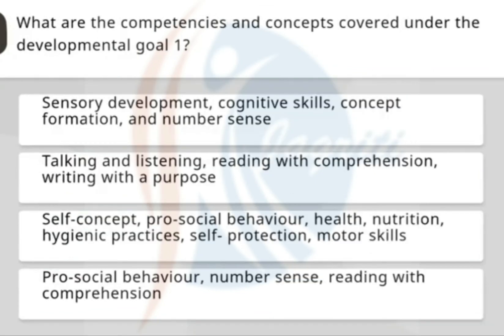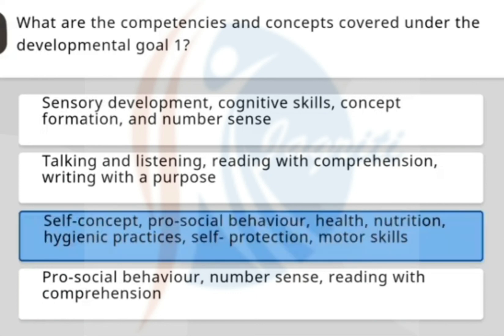What are the competencies and concepts covered under Developmental Goal 1? The correct options are: self-concept, pro-social behaviour, health, nutrition, hygiene practices, self-protection, and motor skills.